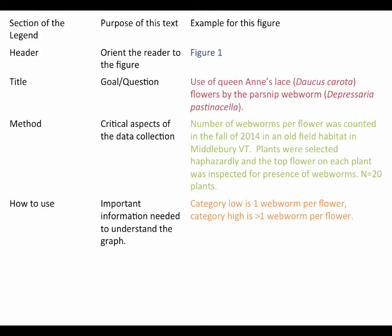I've set this up as a title as a way to work through this — this isn't how you would actually present it, but it makes clear what goes into each section. The first part of the legend is the header. It orients the reader to the figure and it's the text that in the results narrative tells the reader which figure you're going to be talking about next. It traditionally just says Figure 1 or Figure 2.